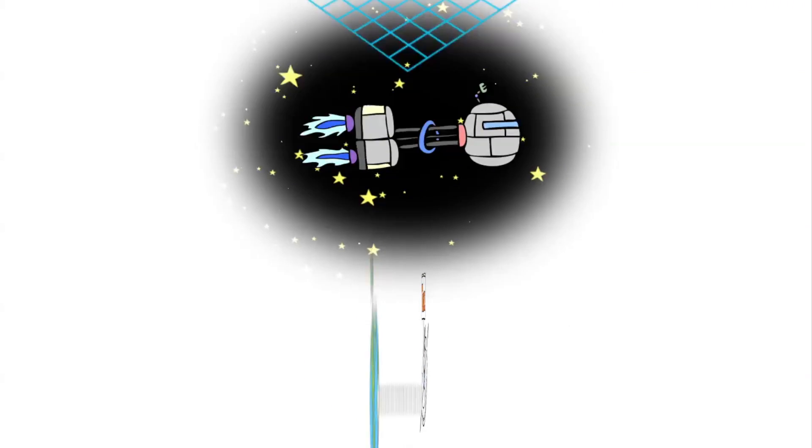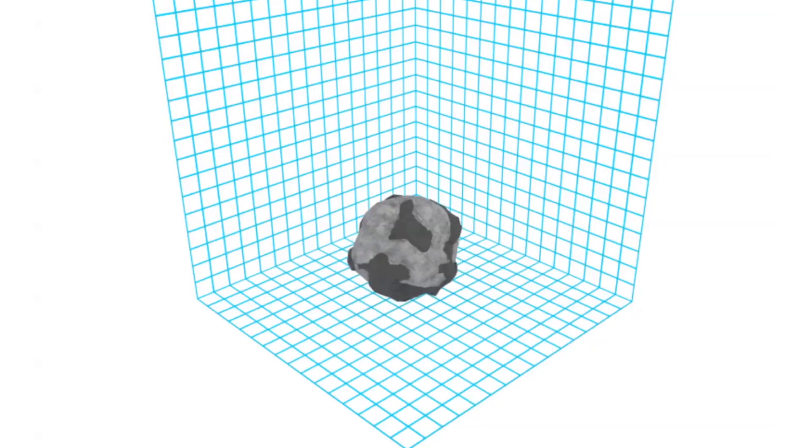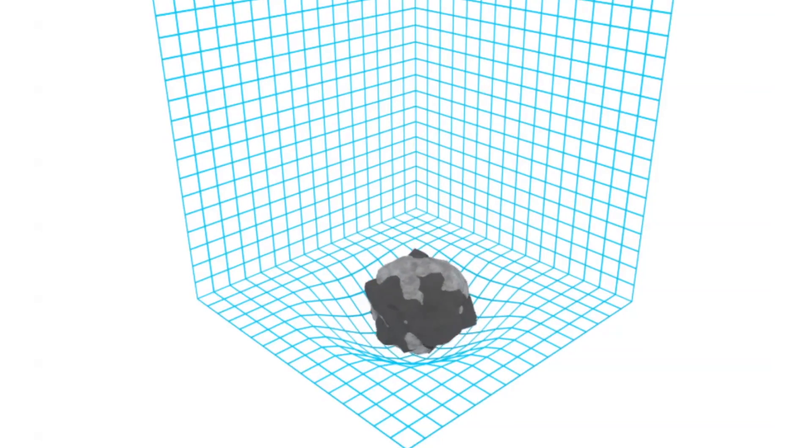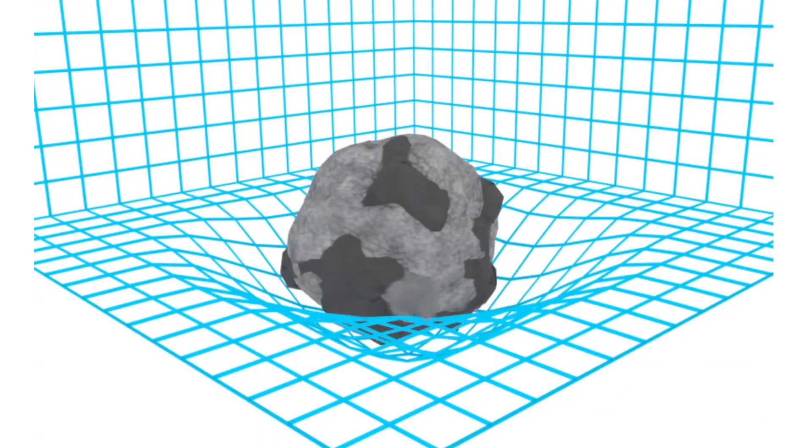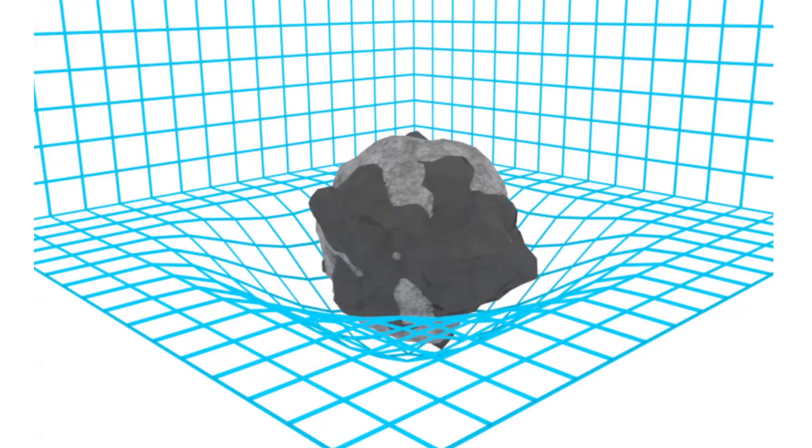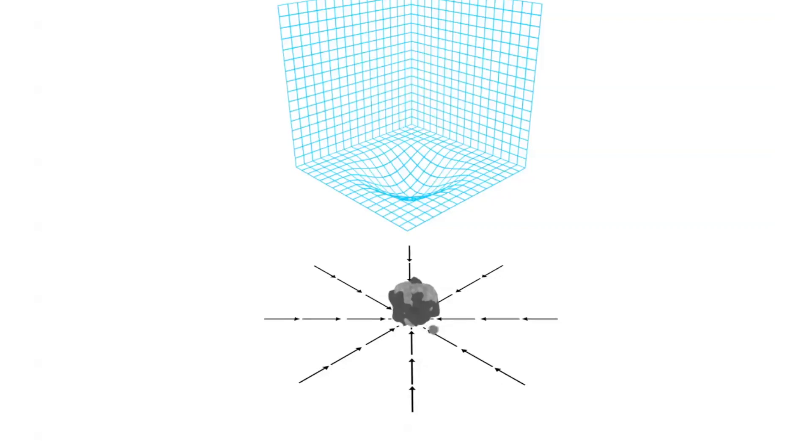But it gets weirder. Einstein also showed that mass and energy bend space and time, and that's what we experience as gravity. In this view, space and time sort of rest on top of the gravitational fields created by the mass and energy in the universe.